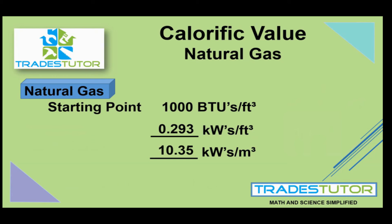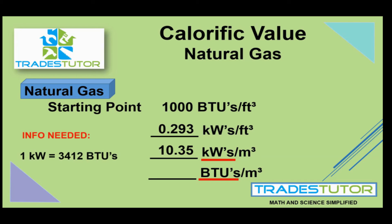The last one is going to be BTUs per cubic meter. We're not changing the volume, but we are changing the way we state the energy. Our info needed: one kilowatt is 3,412 BTUs. So we take 10.35 kilowatts and multiply it by 3,412, and we end up with 35,314 BTUs per cubic meter.